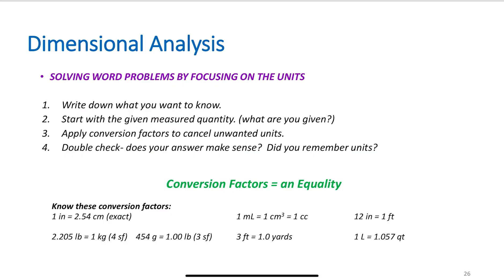I want you to follow this four-step method for dimensional analysis. First, write down what you want to know. Second, start with your given measured quantity. Third, apply conversion factors to cancel your unwanted units — you're converting from one unit to another. Fourth, double-check: does your answer make sense, did you include units, did your units cancel properly, and are you at your desired unit?